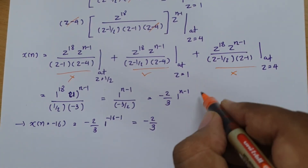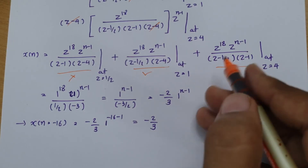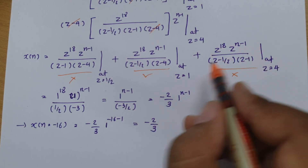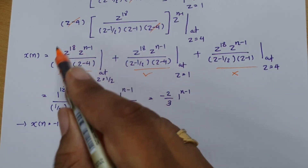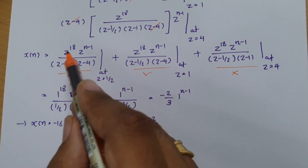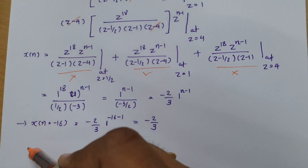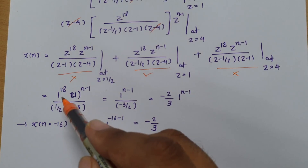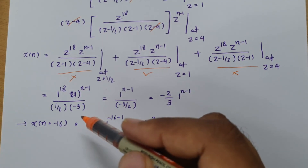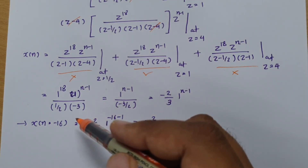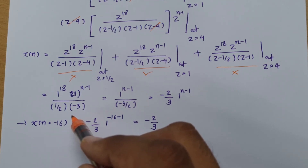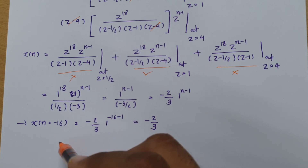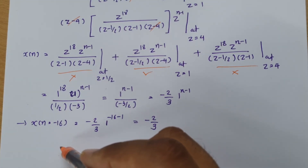If the modulus of Z converges for Z greater than 1, we need to consider both the cases at Z equals 1 and Z equals 4. If the modulus of Z converges at the value one-half, then we only consider the case where Z equals one-half. The residue method is especially useful when the numerator polynomial has a very high order. In such cases this is the easiest way to calculate the inverse Z transform. Otherwise, use the long division or partial fraction method.